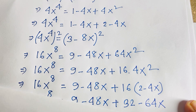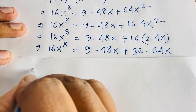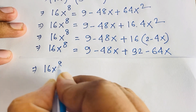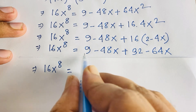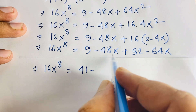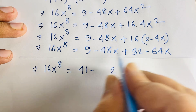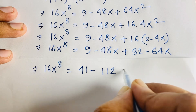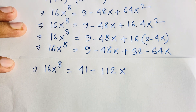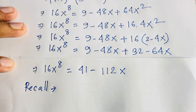Adding the constant and x terms: 9 plus 32 = 41, and 48x plus 64x = 112x. So we find 16x⁸ = 41 minus 112x.